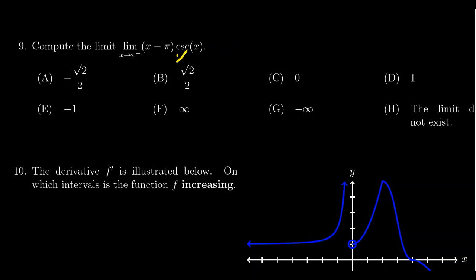The easiest way to do that is to push cosecant into the denominator, so this becomes the limit as x approaches pi from the left. We get x minus pi in the numerator, and the reciprocal of cosecant is sine of x.